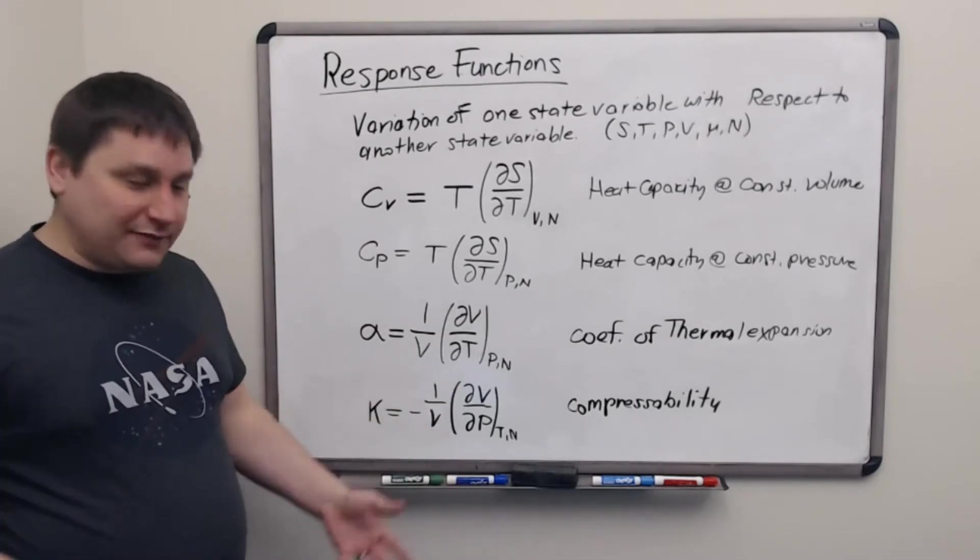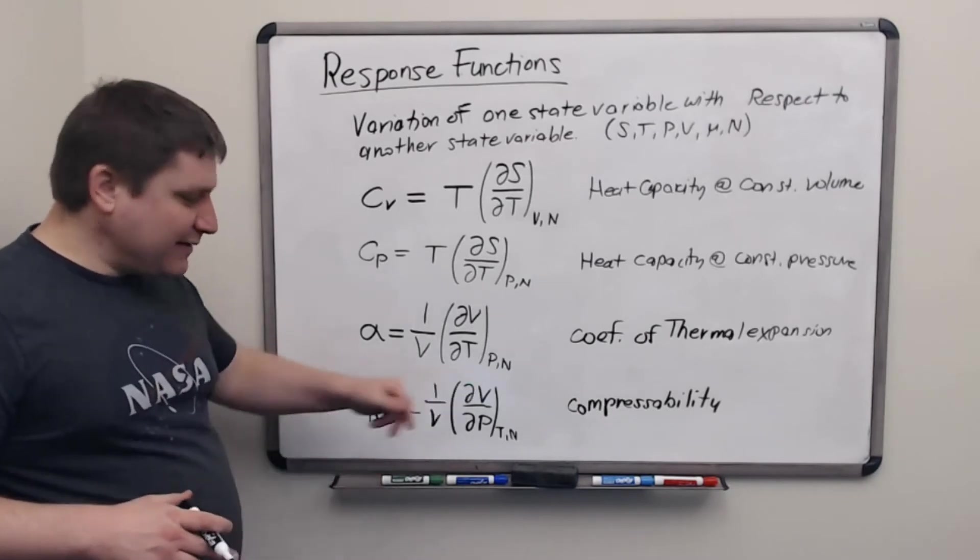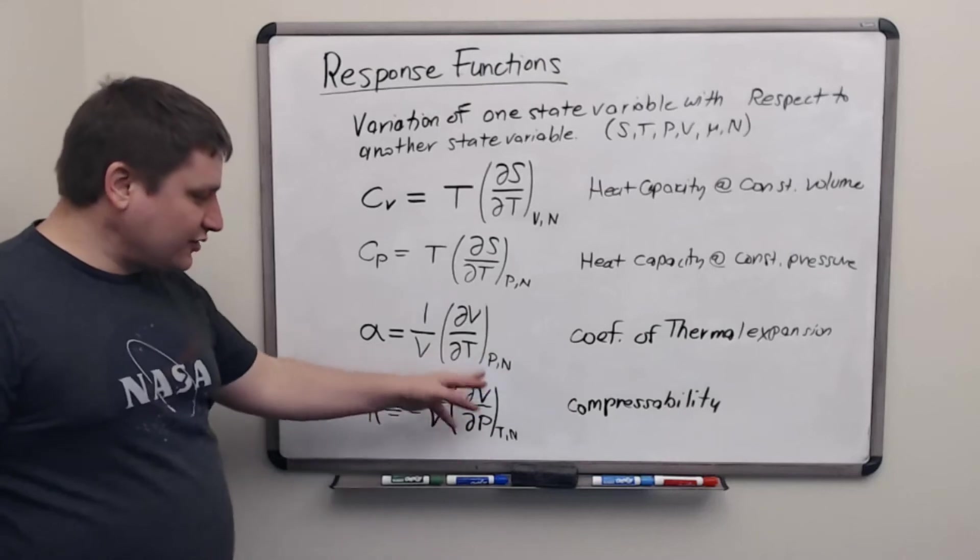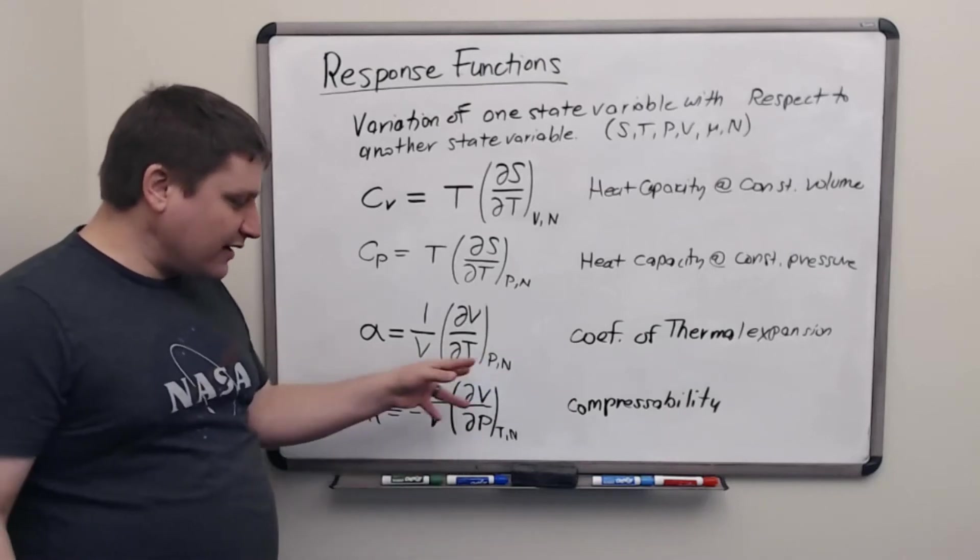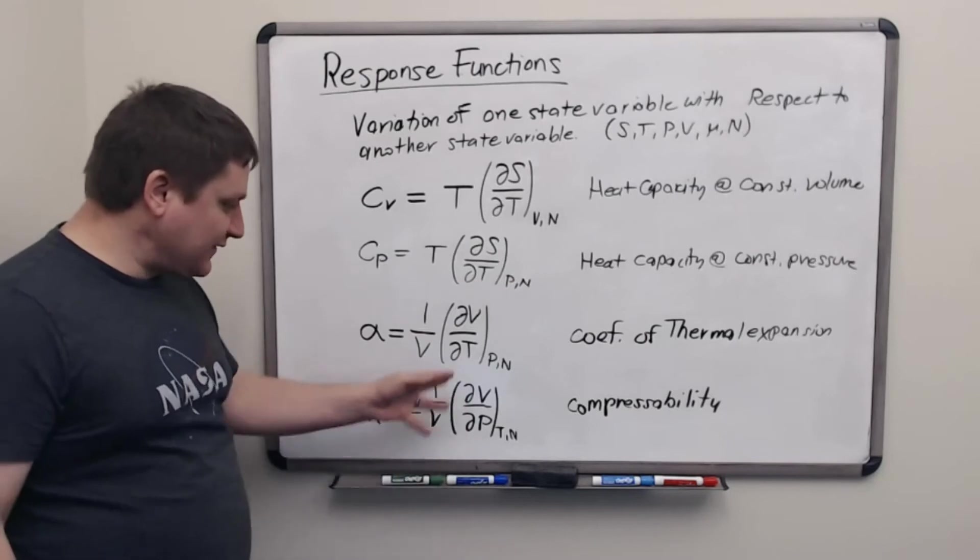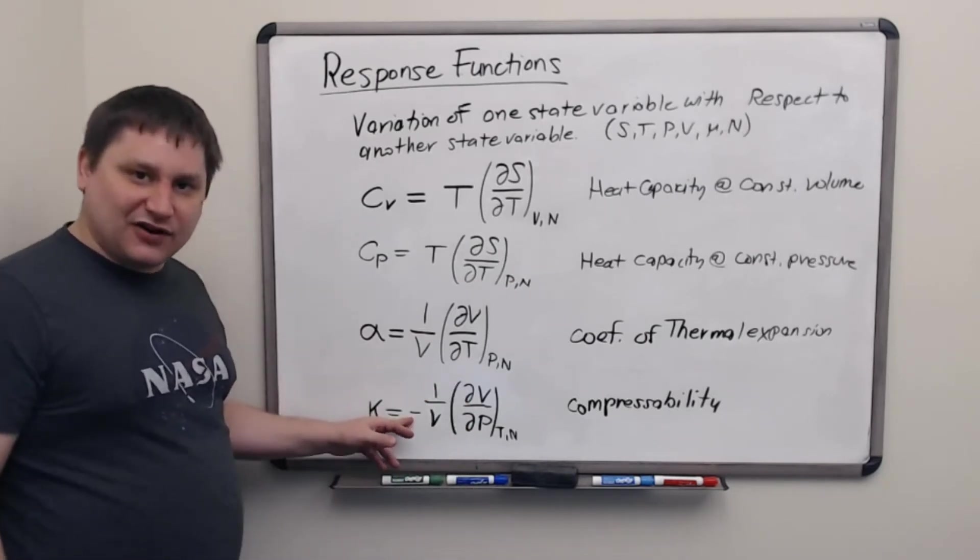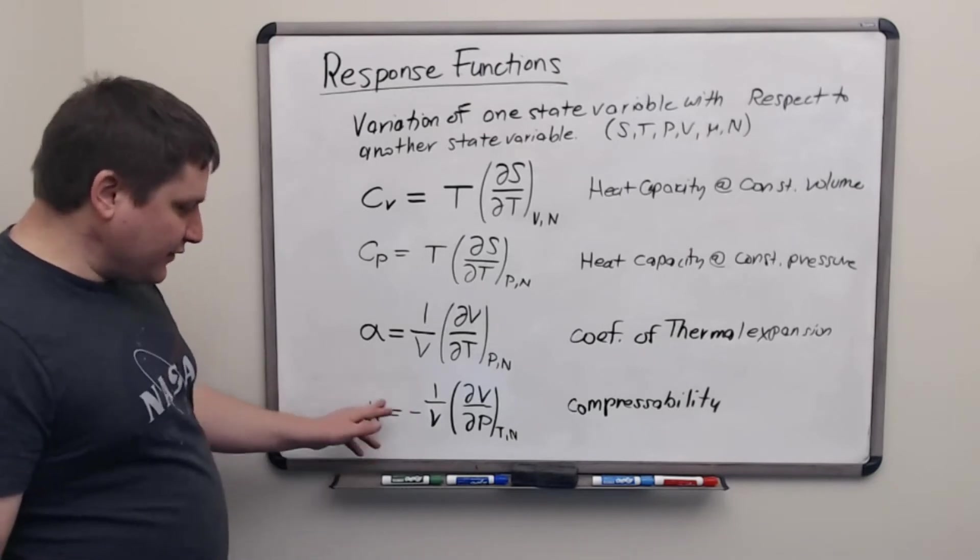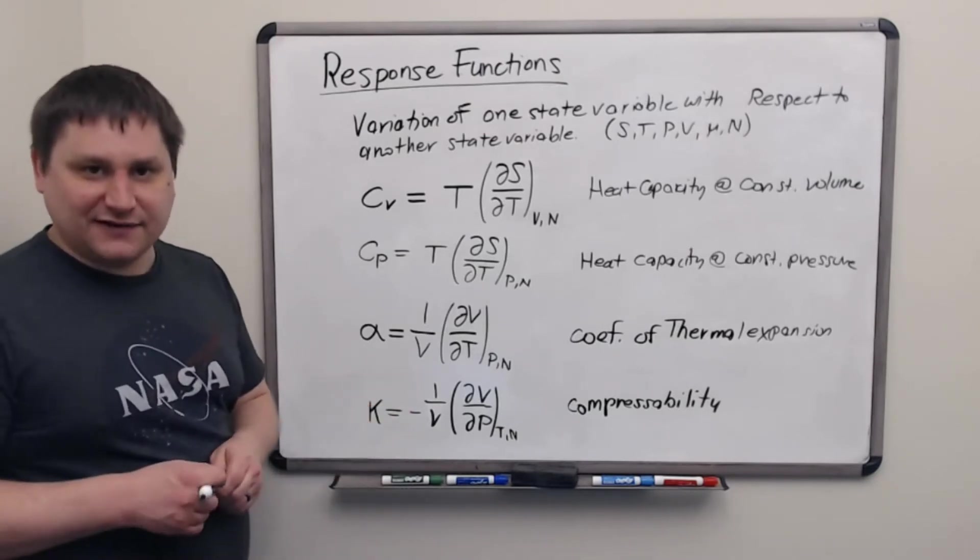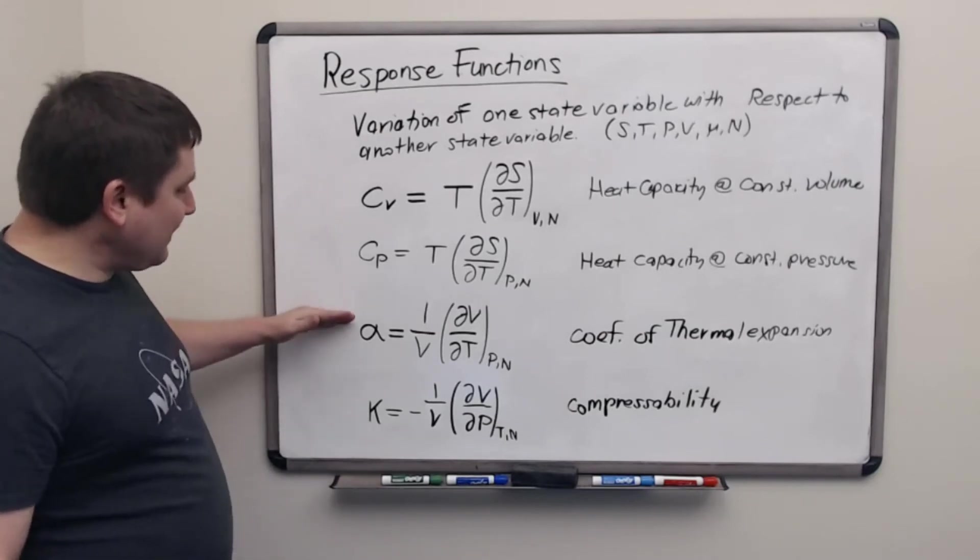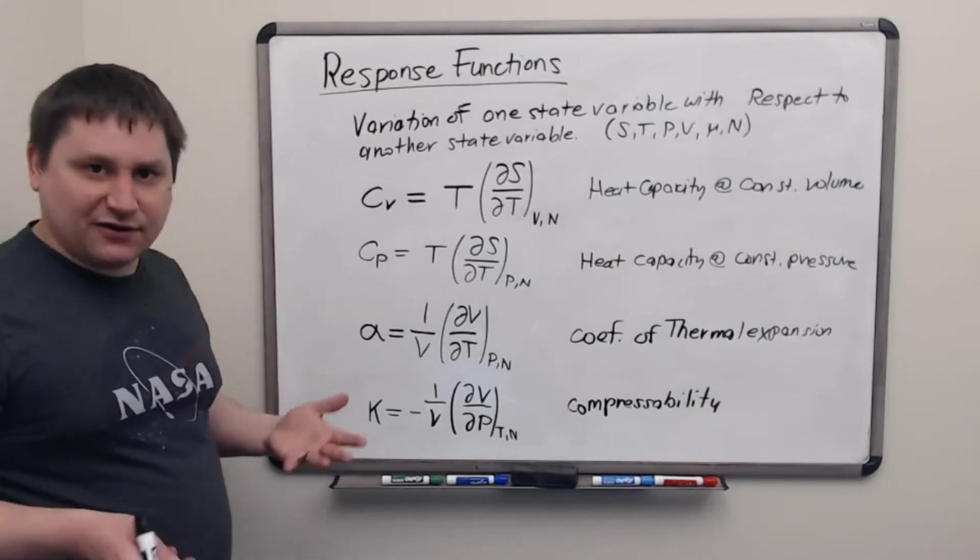This response function is called the compressibility. And it makes sense, right? If you put more pressure on an object, generally its volume changes. For most normal objects, putting pressure on them makes their volume shrink. So this derivative should really come out negative to make normal sense for a material. So we put a minus sign in front purely as a matter of definition so that the compressibility value κ comes out to have a positive value.